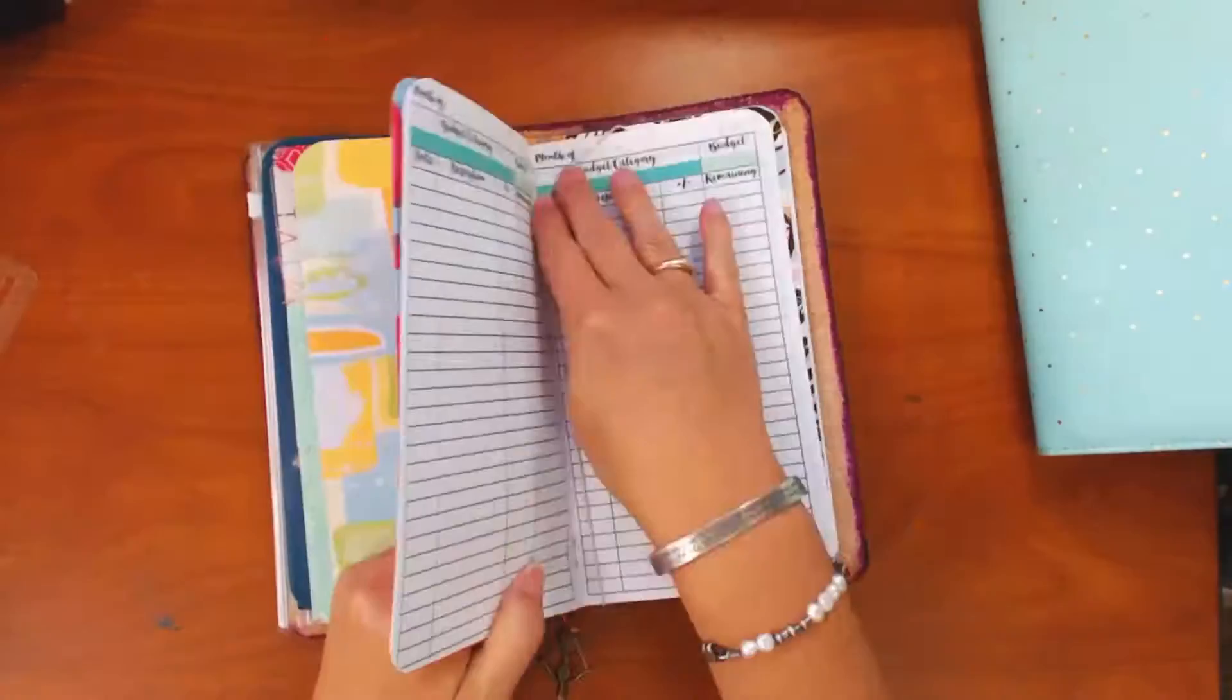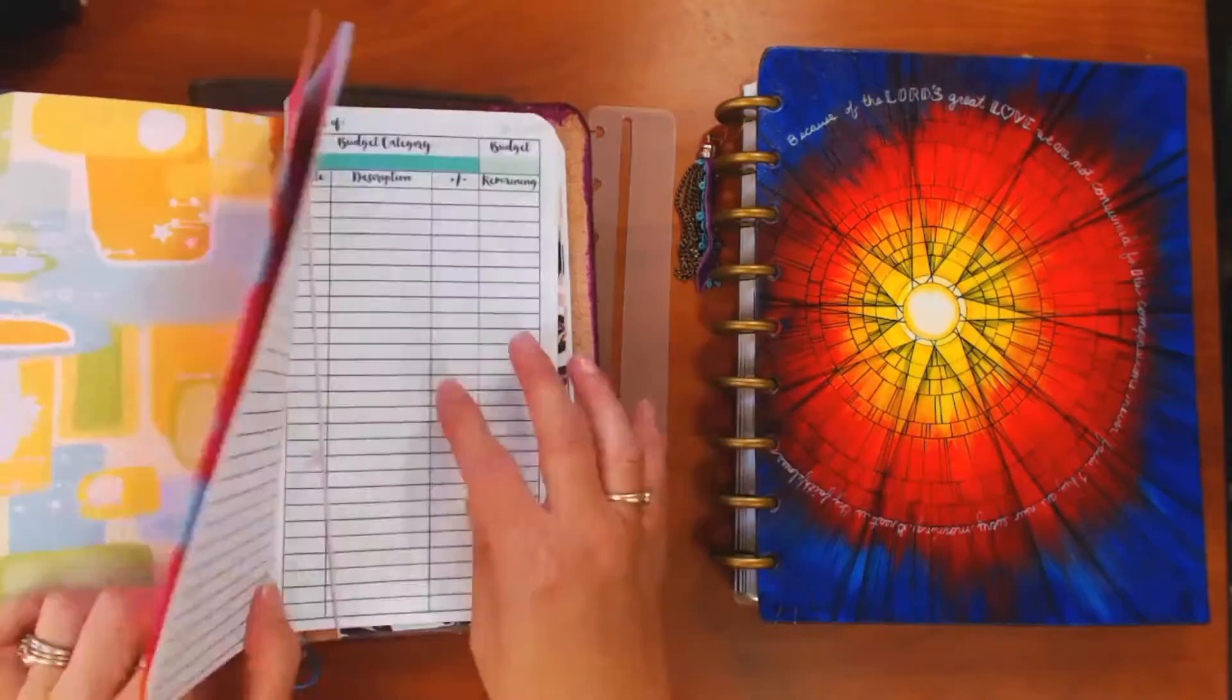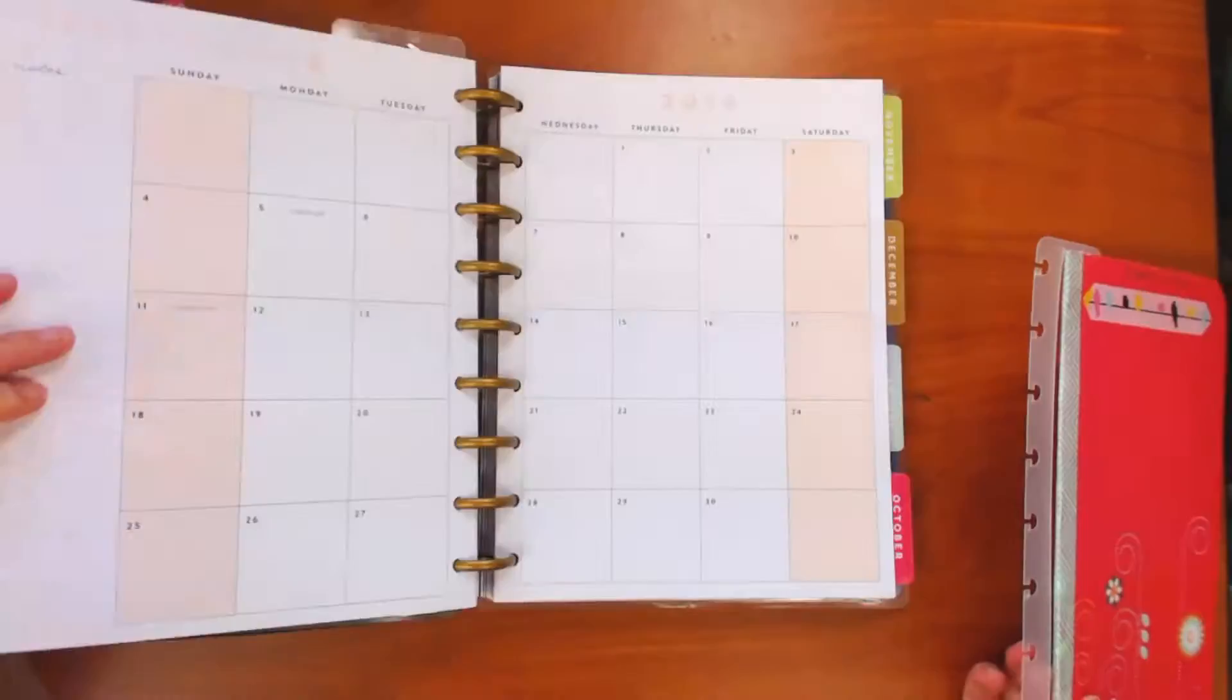Here's an example of putting my Fedori insert into my Happy Planner. I just put the insert on the adapter, I simply snap it on the rings, and there you go.